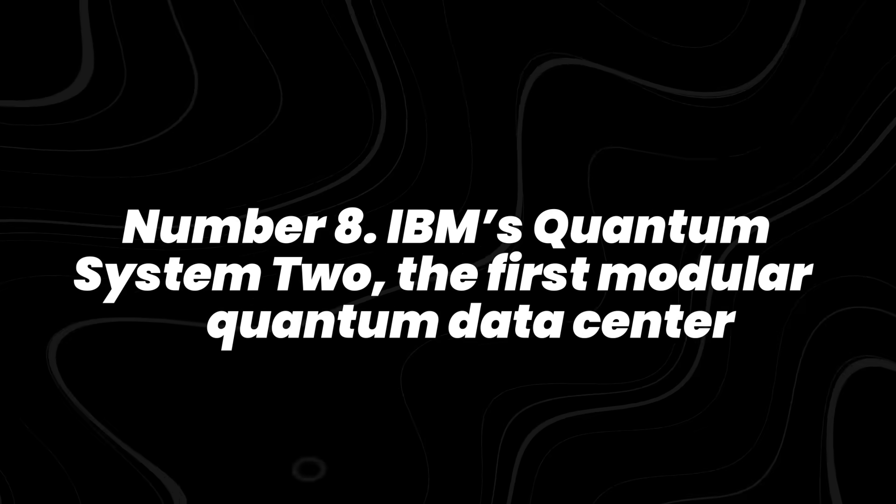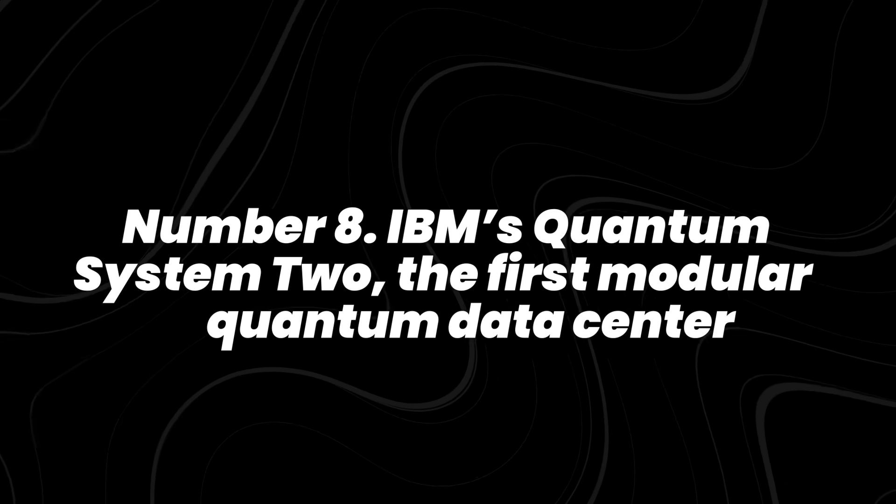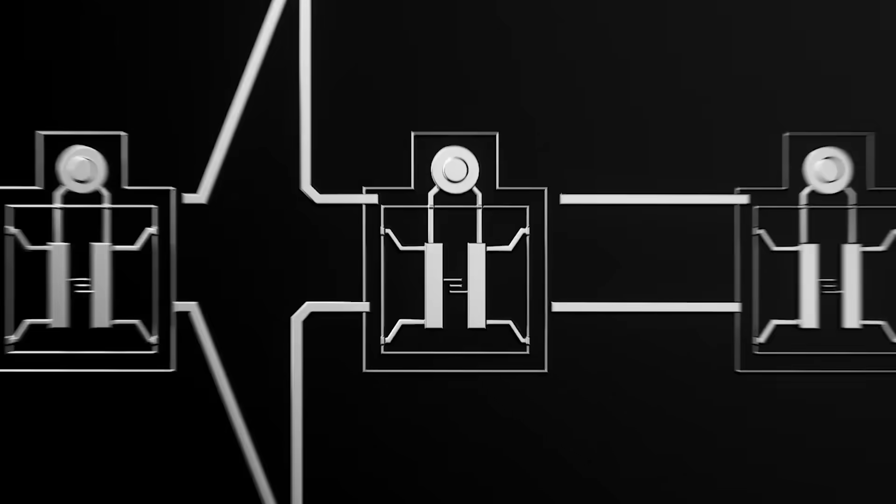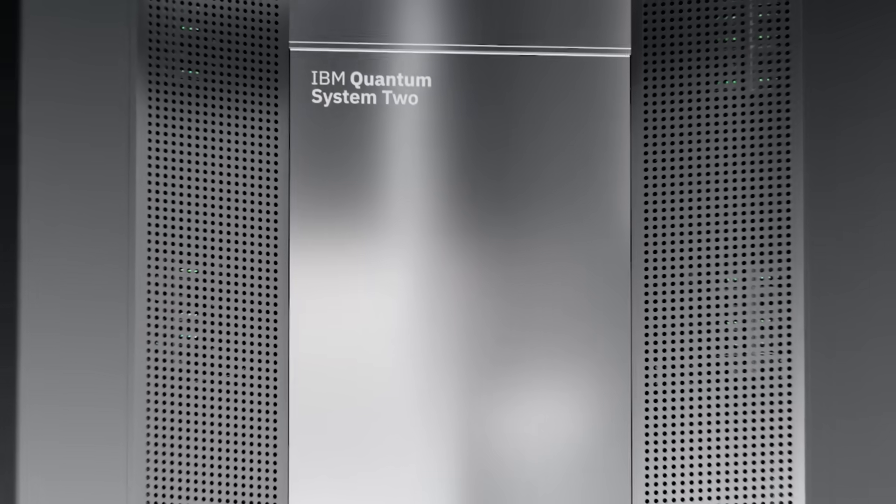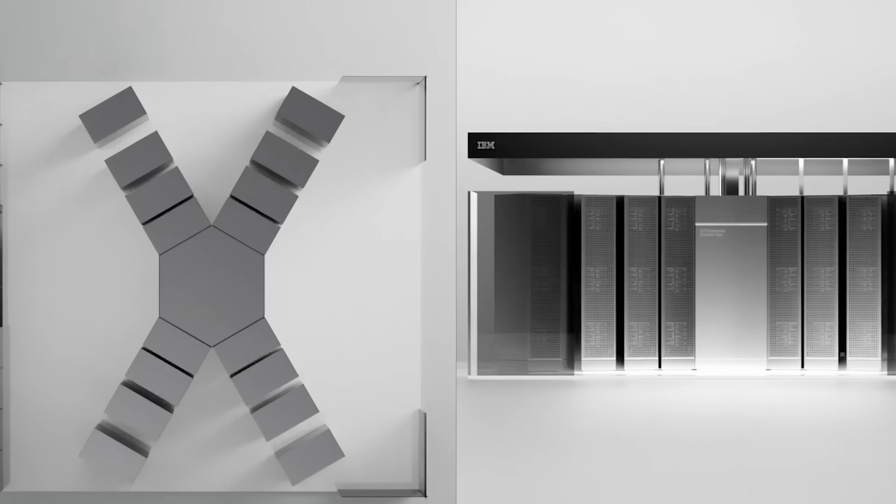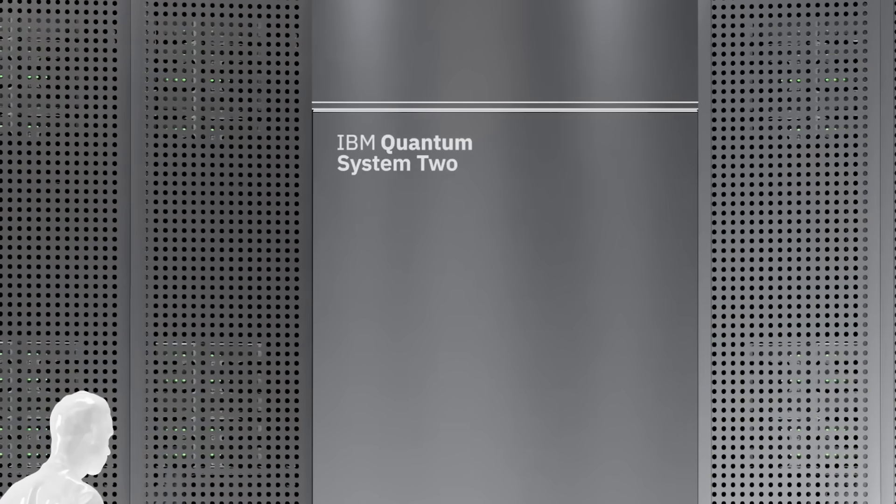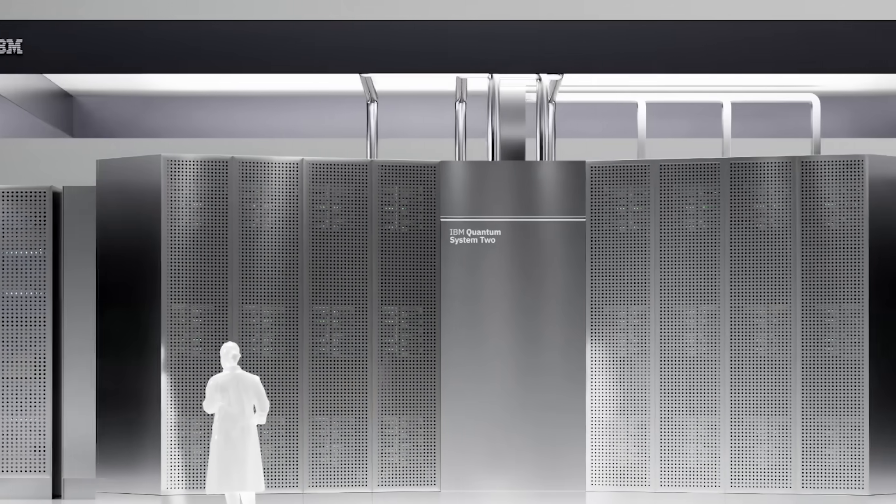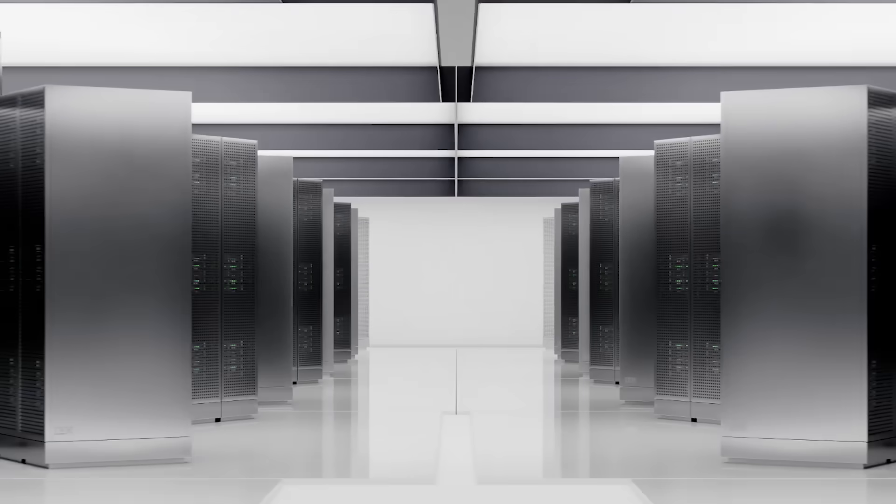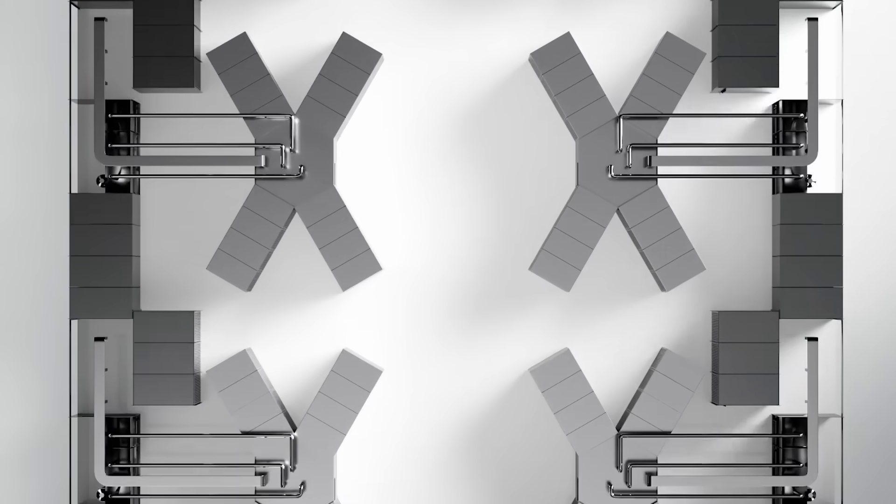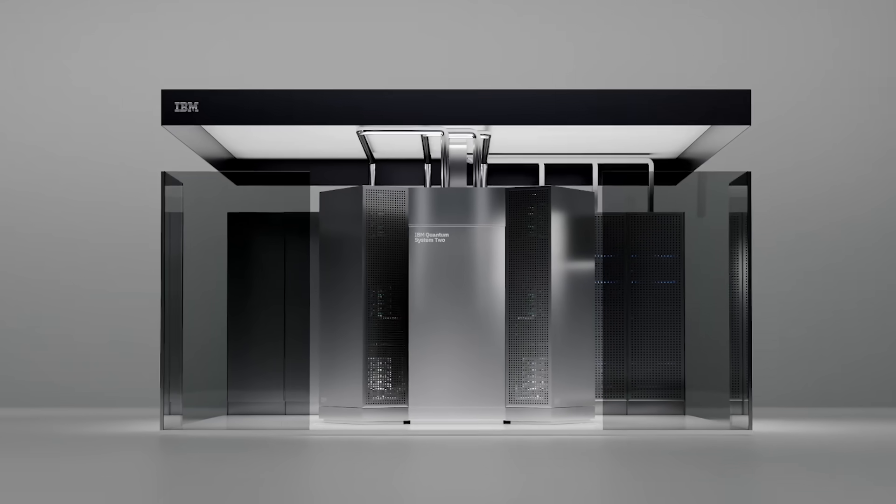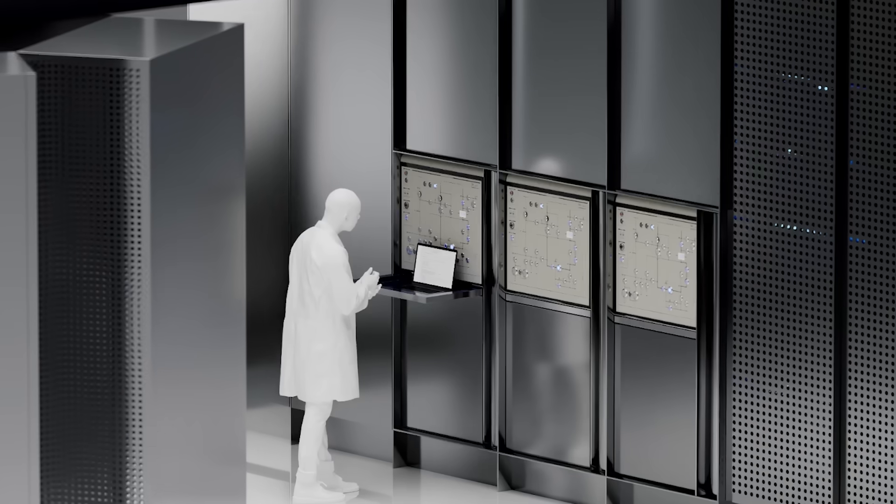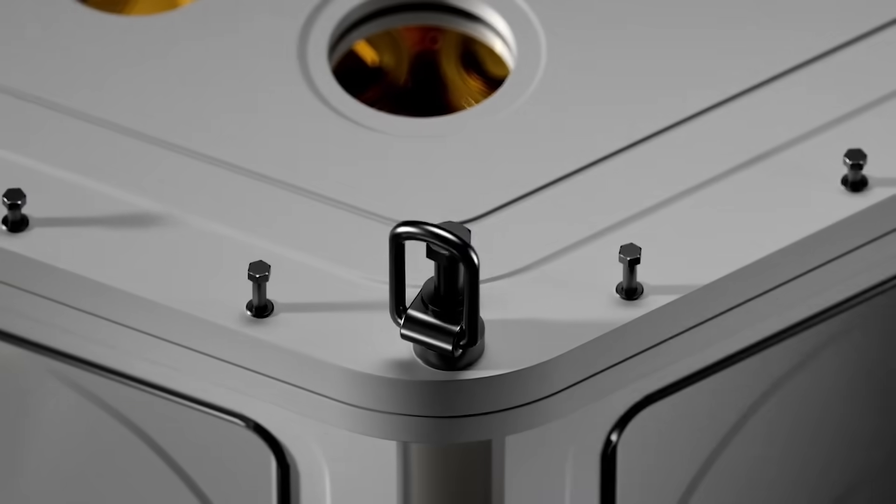Number 8. IBM's Quantum System 2. The first modular quantum data center. Most quantum computers today look like individual lab machines. IBM took a different path and built something closer to a data center. Quantum System 2 is a full modular setup with multiple cryogenic refrigerators, racks for quantum chips, fast classical control servers, and networking built into one platform. The idea is that quantum computing will grow the same way classical supercomputers did, by connecting many processors, rather than relying on a single giant chip.